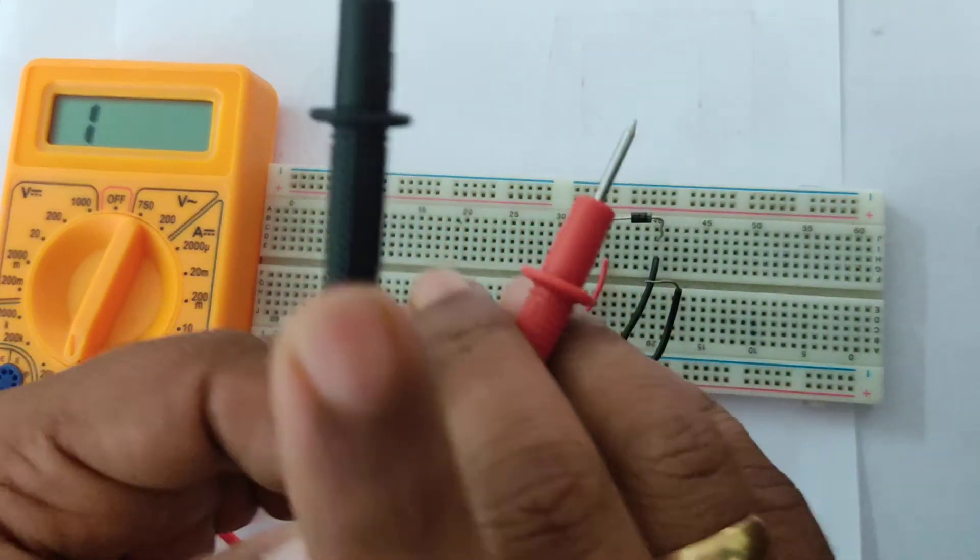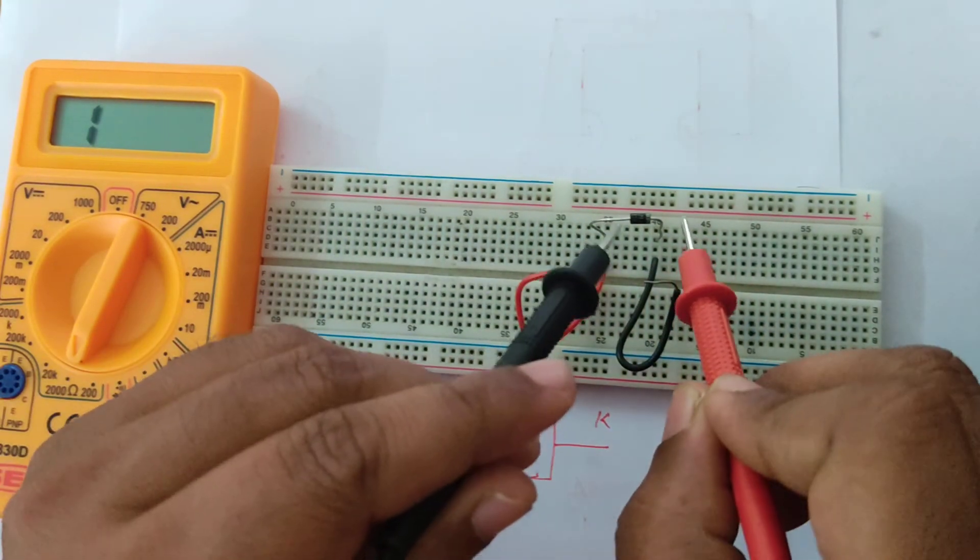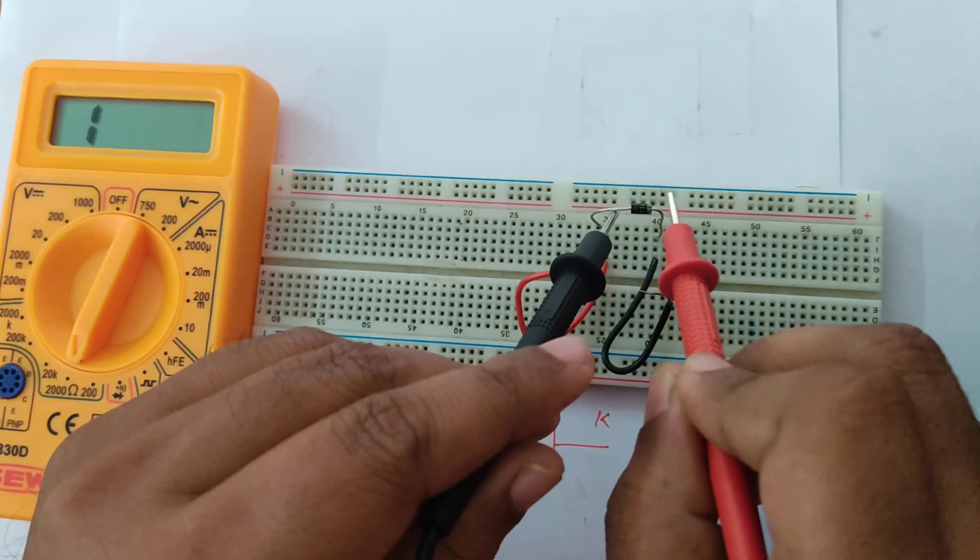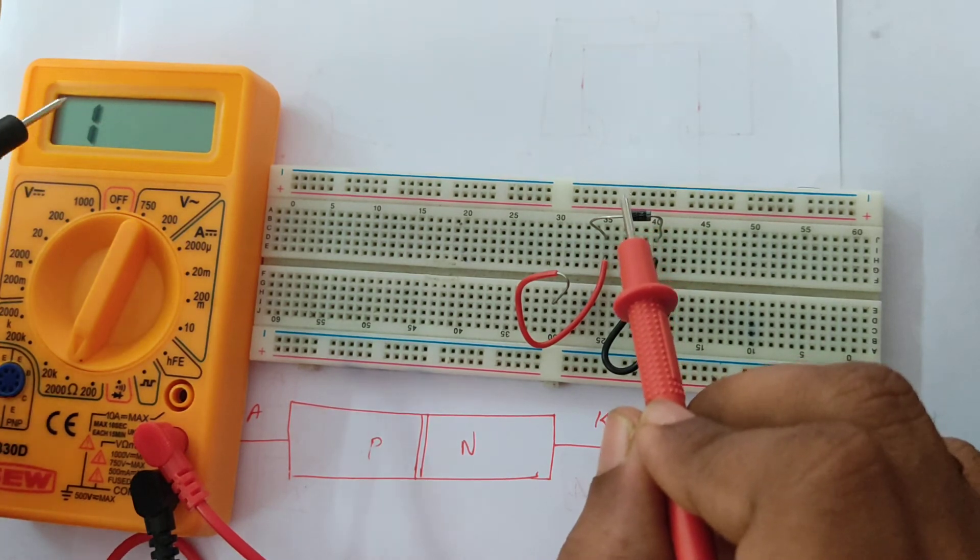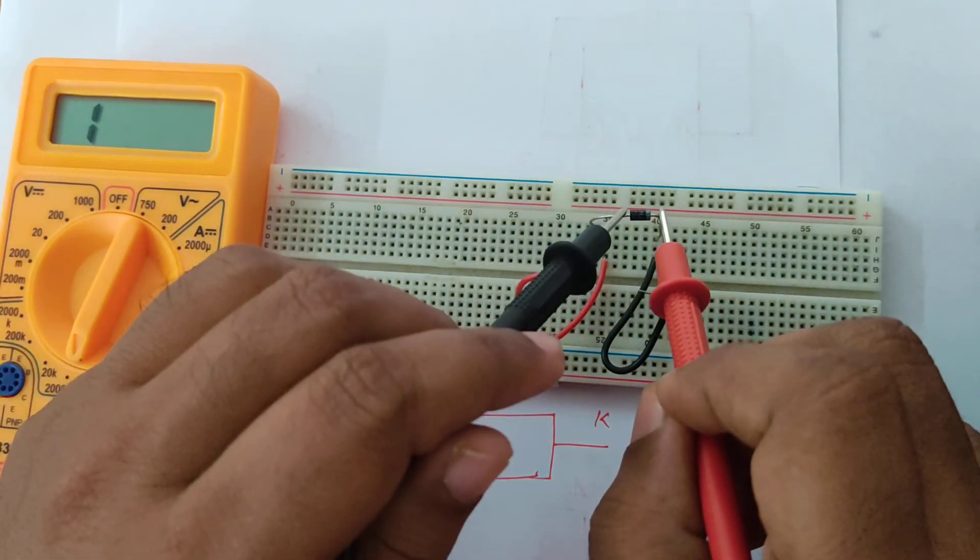Now let us see what happens if I swap it. There is no resistance flowing. If I get 1, it is saying that it is infinity. The resistance is infinity.